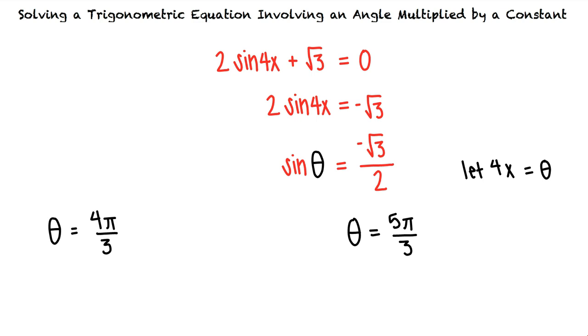We can represent these solutions as theta equals 4 pi thirds plus 2 k pi, k element z, or theta equals 5 pi thirds plus 2 k pi, k element z.